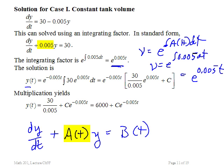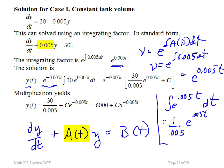Here's the solution: y equals e to the minus 0.005t times the integral of 30 times e to the 0.005t dt. 30 is a constant, can come out from under the integral sign, and you're left with just the integral of e to the 0.005t dt. And that's equal to 1 over 0.005 e to the 0.005t plus some constant c.